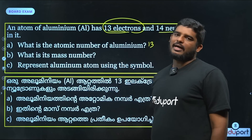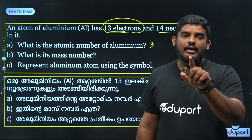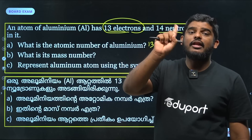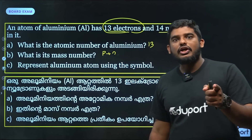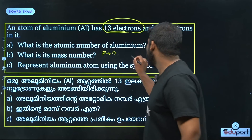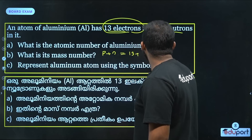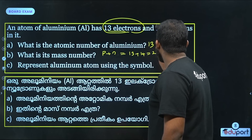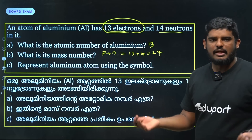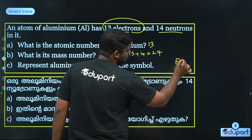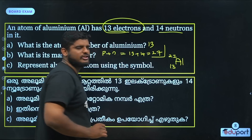What is the mass number? Mass number equals protons plus neutrons. Atomic number is 13, so protons are 13. Mass number = 13 plus 14 = 27. The representation of aluminum: atomic number 13, mass number 27.